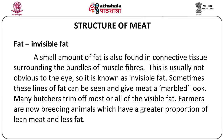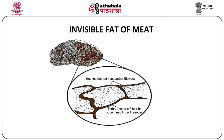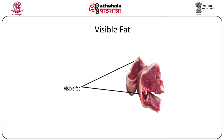Sometimes these lines of fat can be seen and give meat a marbled look. Many butchers often trim off the visible fat, and if you are health conscious it is better to trim the fat off and eat only the lean portions of the meat. Farmers are now breeding animals which have a greater proportion of lean meat and less fat. This picture shows the invisible fat in the meat — thin lines of fat along the connective tissue surrounding the bundles of muscle fibers — as well as the visible fat found under the skin and between the muscles, sometimes covering the muscles as cover fat.